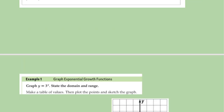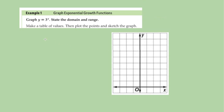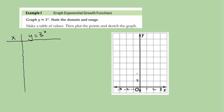Graph y equals 3 to the x power — state the domain and range. We're going to make a table with x values and y equals 3 to the x. For x, we'll use negative 3, negative 2, negative 1, then 1, 2, and 3. And we'll count the y-axis by 2s: 4, 6, 8, 10, 12, 14, 16, 18.